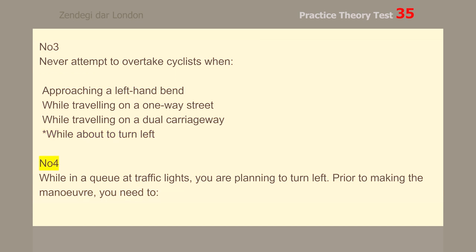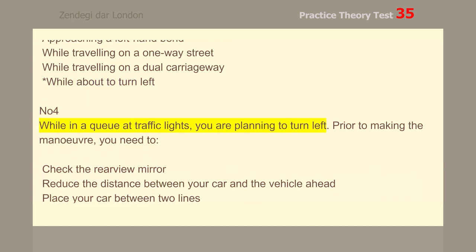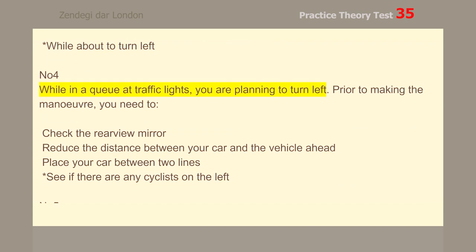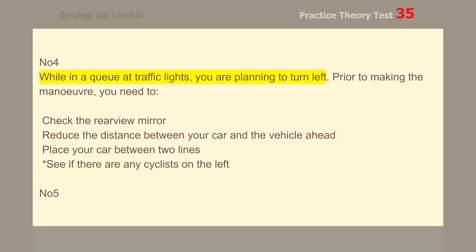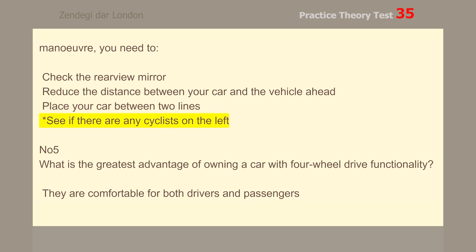Number 4. While in a queue at traffic lights, you are planning to turn left. Prior to making the maneuver, you need to see if there are any cyclists on the left.